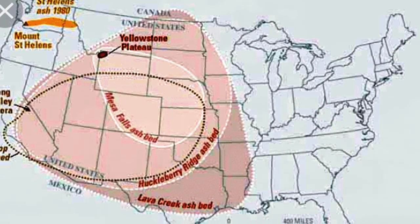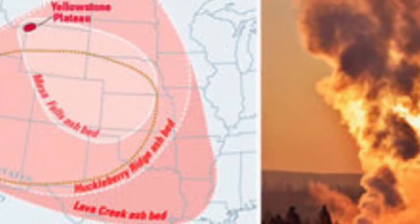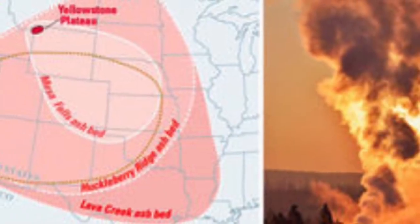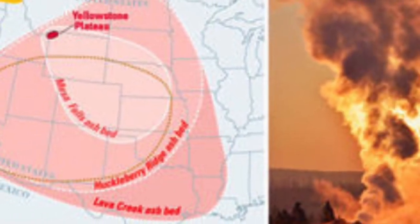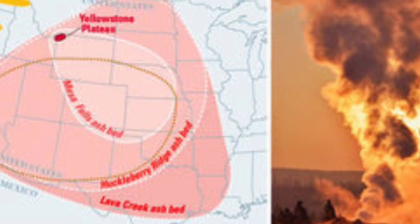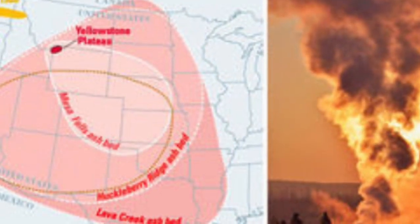Deposit thicknesses are decimeters to meters in the northern Rocky Mountains, centimeters to decimeters in the northern Midwest, and millimeters to centimeters on the east, west, and Gulf coasts. Yellowstone volcano is one of the world's biggest and most active supervolcano systems.